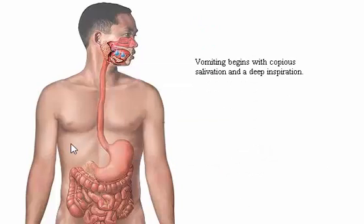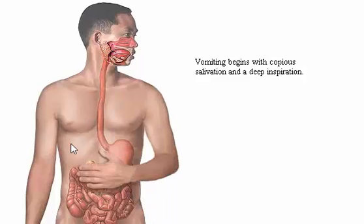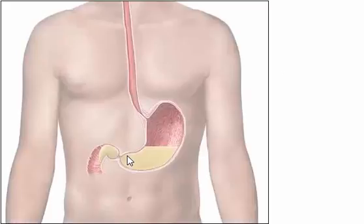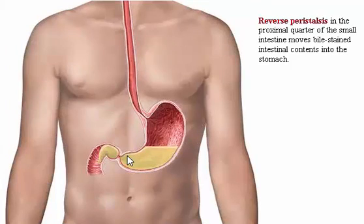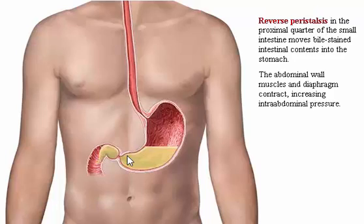Vomiting begins with copious salivation and a deep inspiration. Reverse peristalsis in the proximal quarter of the small intestine moves bile-stained intestinal contents into the stomach. The abdominal wall muscles and diaphragm contract, increasing intra-abdominal pressure.